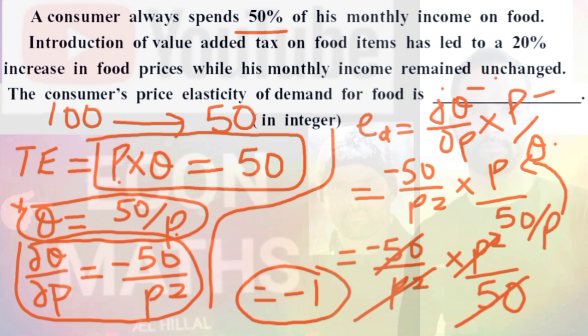The 20% price increase figure was given to confuse us — it acts as a distractor. In the earlier approach I got a value of −0.8, and rounding that to the next possible integer also gives minus 1. So the final answer is −1.